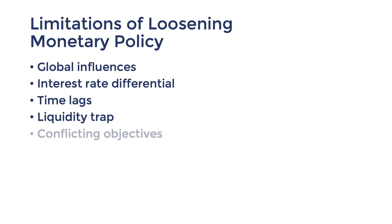Lastly, one of the reasons monetary policy has not achieved its goal to stimulate aggregate demand is that it was conflicting with fiscal policy's objectives. Since the recovery from the GFC, tax revenue has exceeded government expenditure, as fiscal policy in Australia has been aimed at fiscal consolidation — getting the federal budget back to surplus. So while monetary policy has been expansionary, fiscal policy has been contractionary, slowing down aggregate demand.